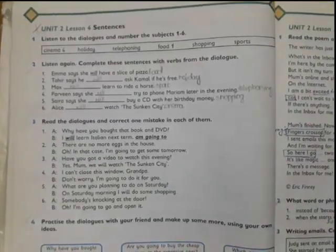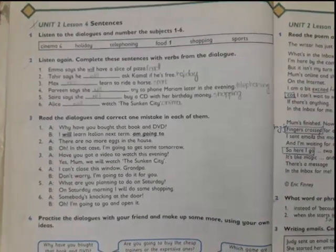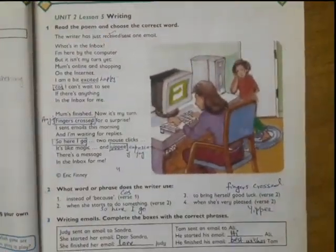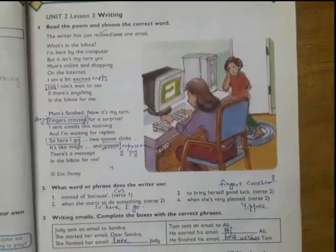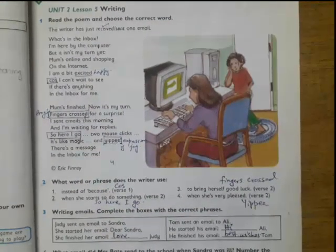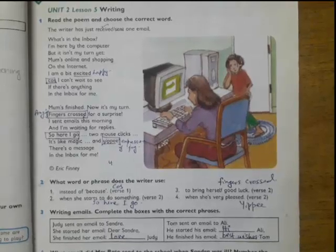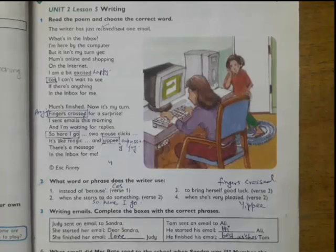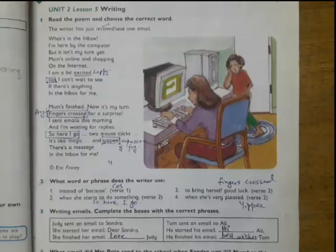In Unit 2 Lesson 4, we have grammatical work and we will do it from the grammar book, so move on to next. It is Unit 2 Lesson 5. I think it is a kind of poem. What's in the Inbox? I'm here by the computer but it isn't my turn yet. Mom's online and shopping on the internet. I am a bit excited - excited means happy.